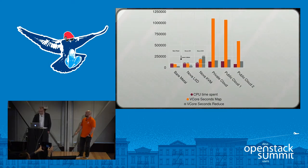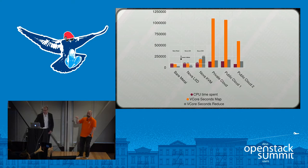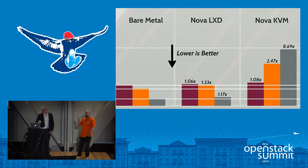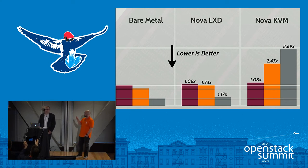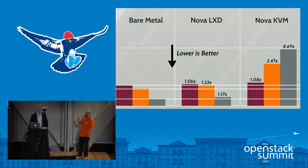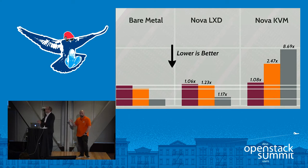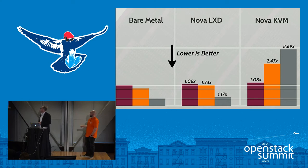We also ran the same tests on public and private clouds — not a competition at all. The machines on the public and private clouds were much lower spec than our hardware. The purple is the CPU time spent on successful tasks — more or less the same. The orange is the vcore-seconds for the map jobs, which is essentially CPU milliseconds times the number of cores. The gray is the same for the reduce phase. You can see the same result there.